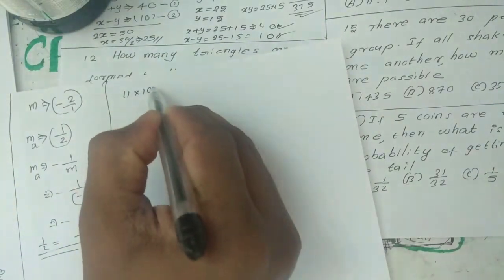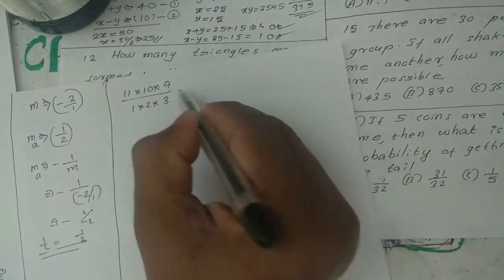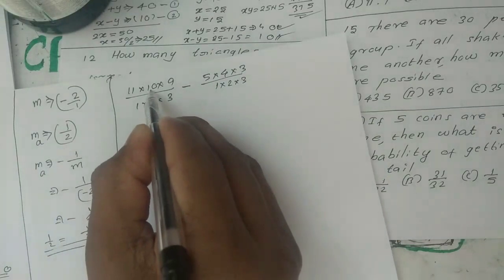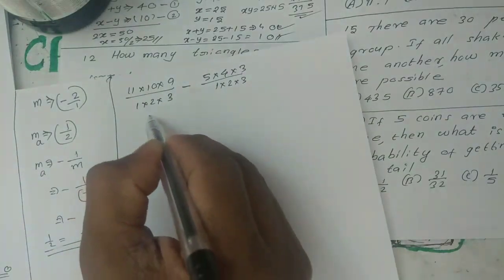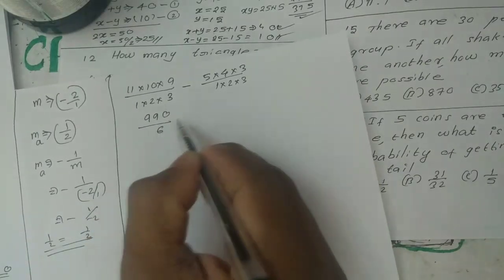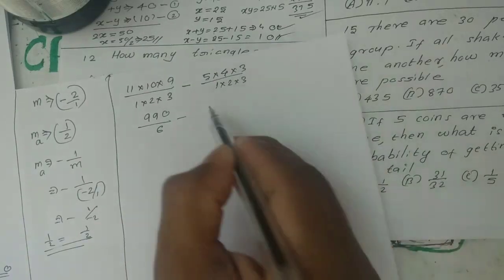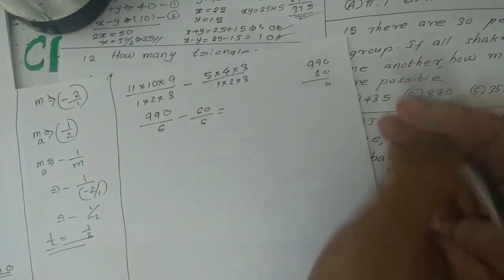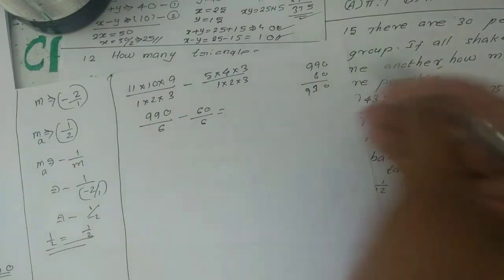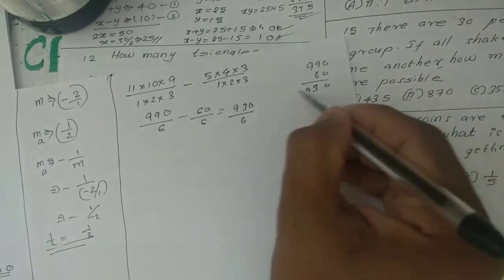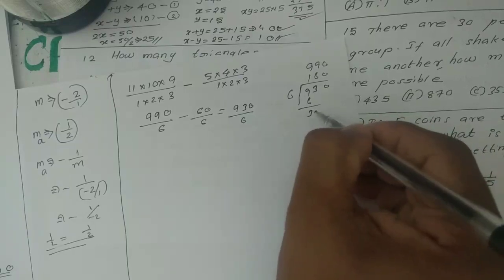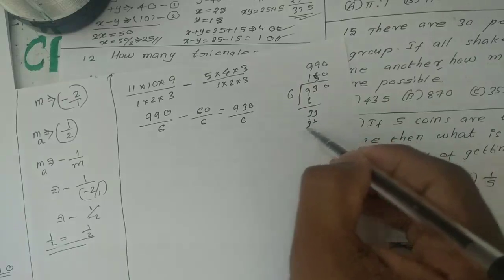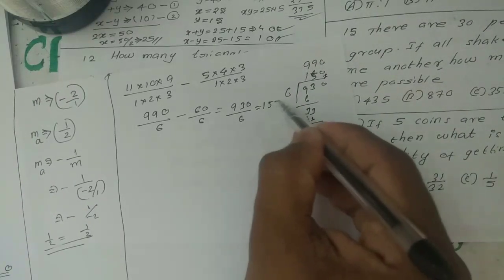Applying the formula: C(11,3) minus C(5,3). That gives us 165 minus 10, which equals 155. So the answer is option C, 155.